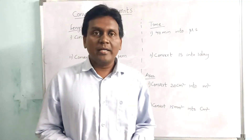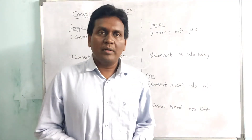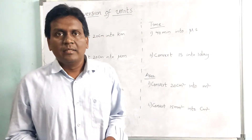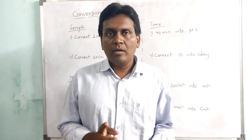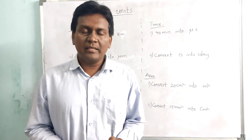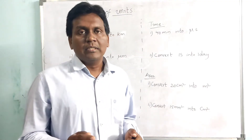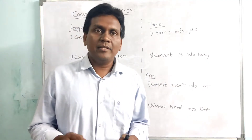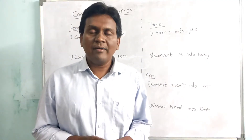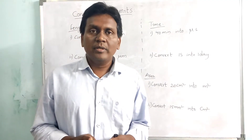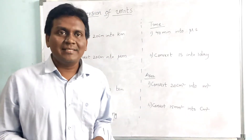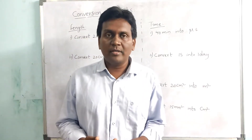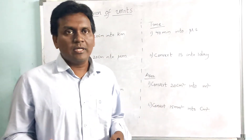To convert a unit from one unit to another unit, we have to follow two steps. First, we have to convert the given unit into SI unit. After that, the SI unit should be converted into the desired unit — that is, to whichever unit we need to convert.